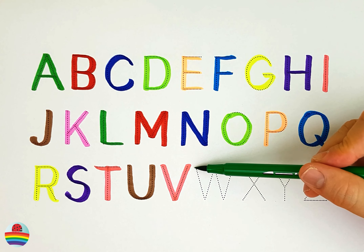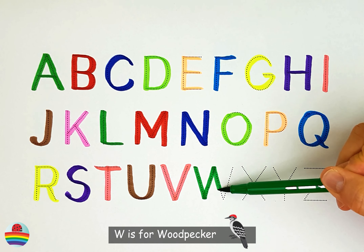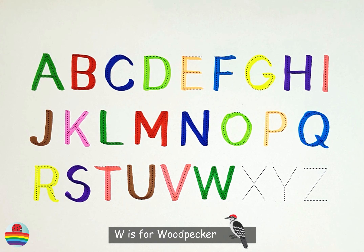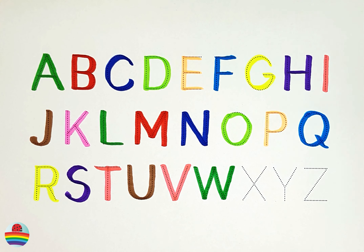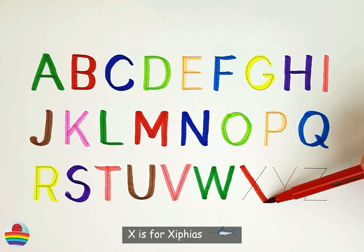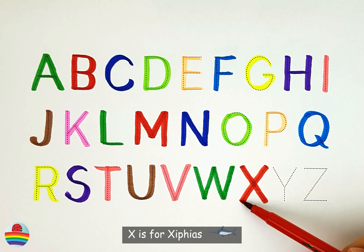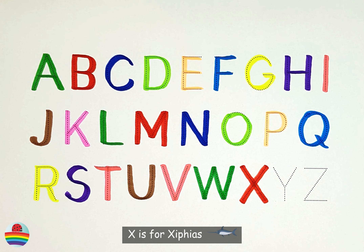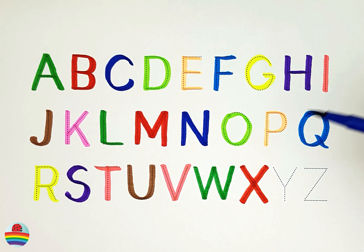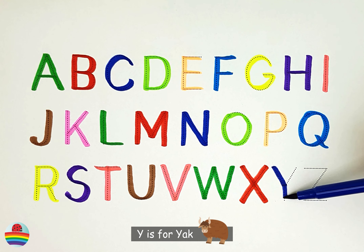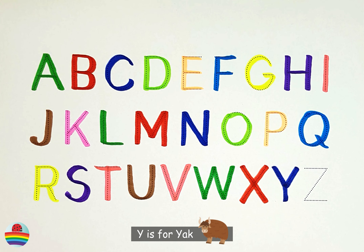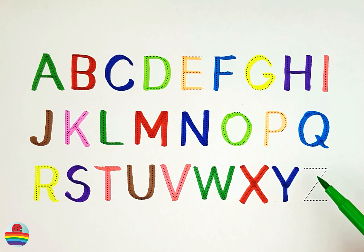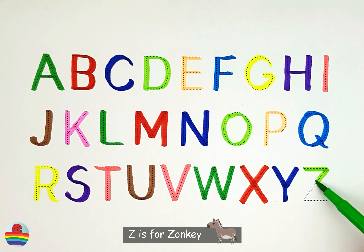W. W is for Woodpecker. W. X. X is for Xiphias. X. Y. Y is for Yak. Y. Z. Z is for Zonkey. Z.